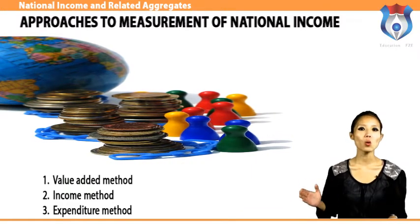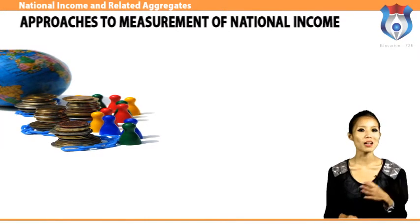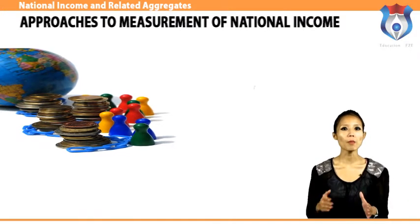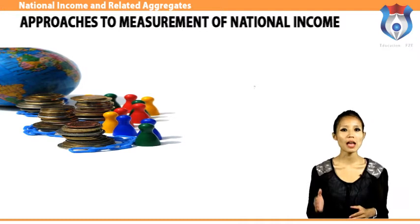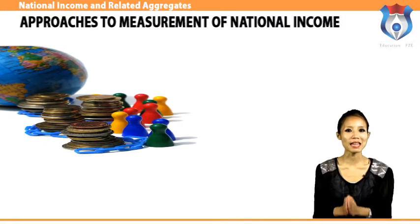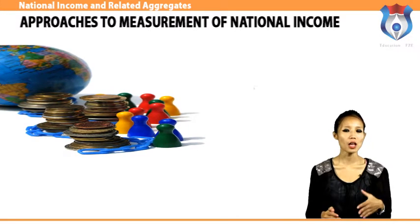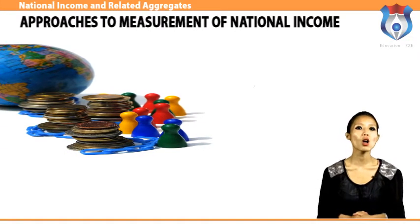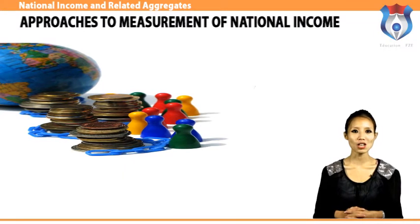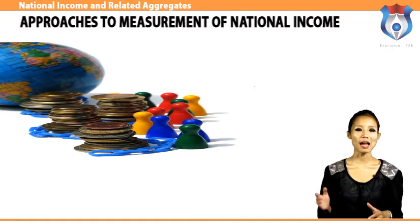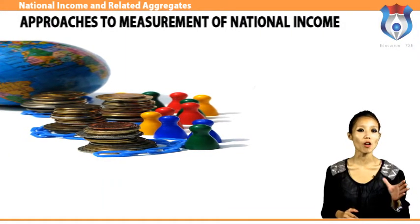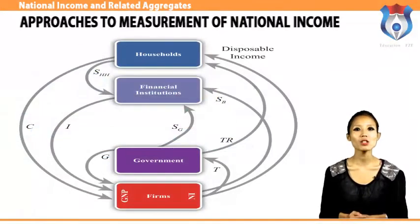The income approach is used to estimate the market value of income-producing properties such as office buildings, warehouses, apartment buildings, and shopping centers. It is based on an estimate of net income from the operation of an income-producing activity. The principle of anticipation — that value is created by the expectation of benefits to be derived from possession, operation, and/or capital gains — underlies this approach. The income approach is used when reliable financial data is available for recent sales of similar income properties.